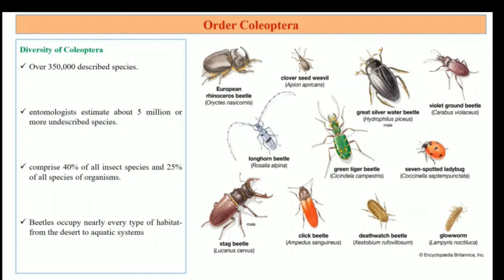Beetles occupy nearly every type of habitat, from the desert to aquatic systems. This is an example of Order Coleoptera species.